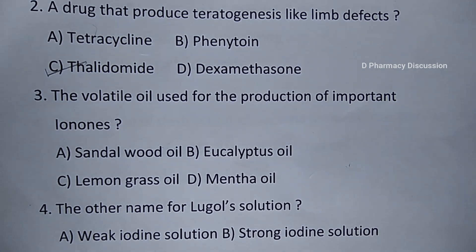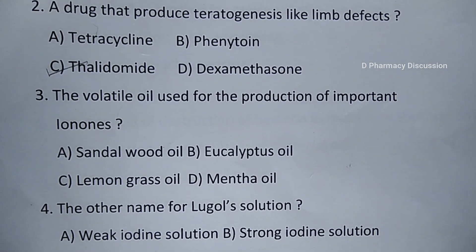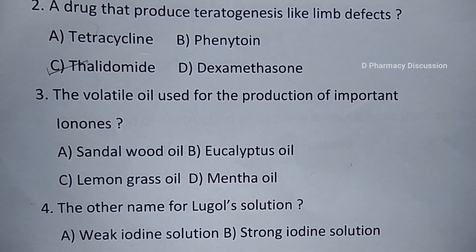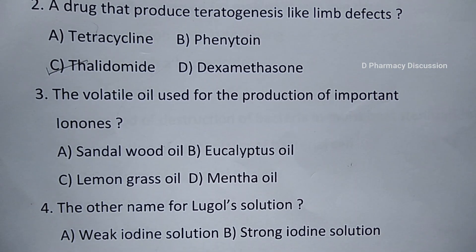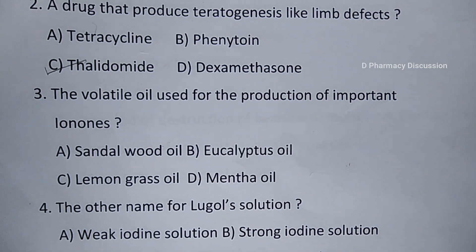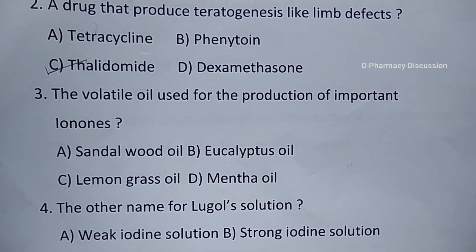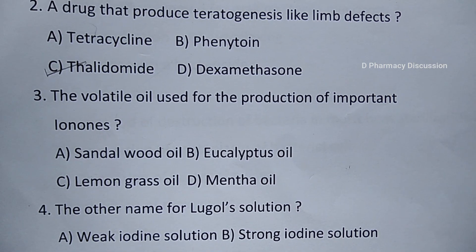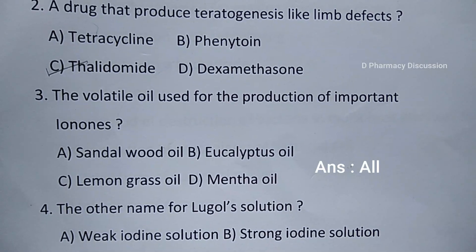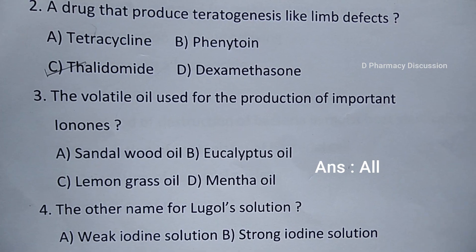Question number 3: the volatile oil used for the production of important ionones. Option A. Sandalwood oil, B. Eucalyptus oil, C. Lemongrass oil, and option D. Mentha oil. Ionones are aroma compounds found in a variety of essential oils. Correct answer is all — all these essential oils are used for the production of ionones.